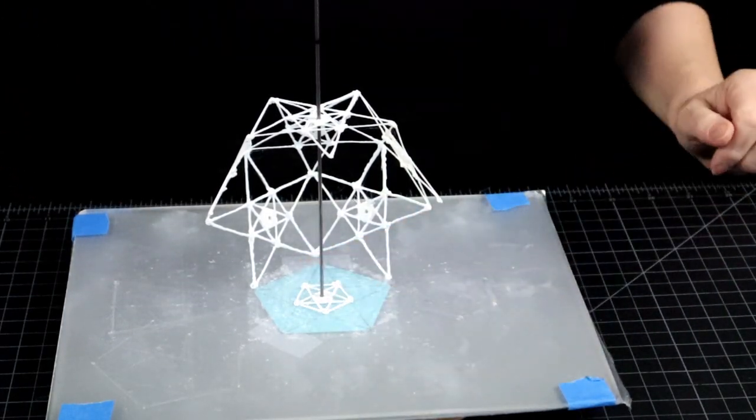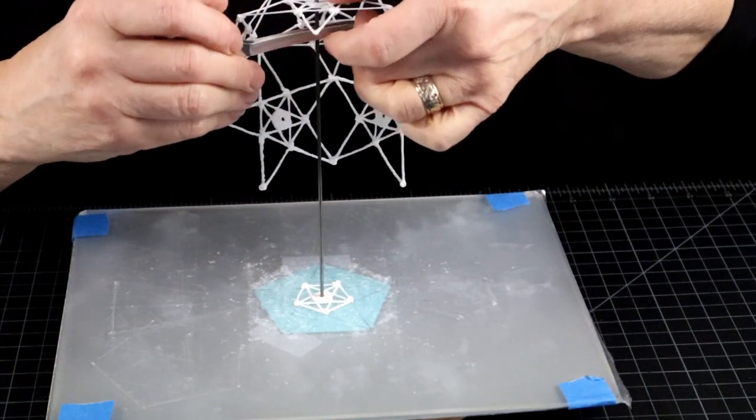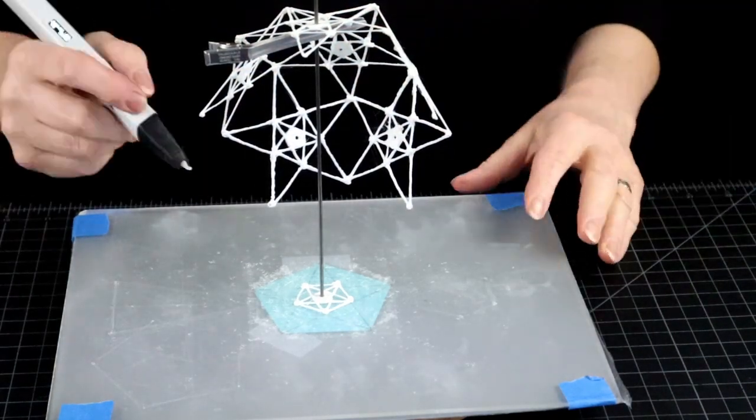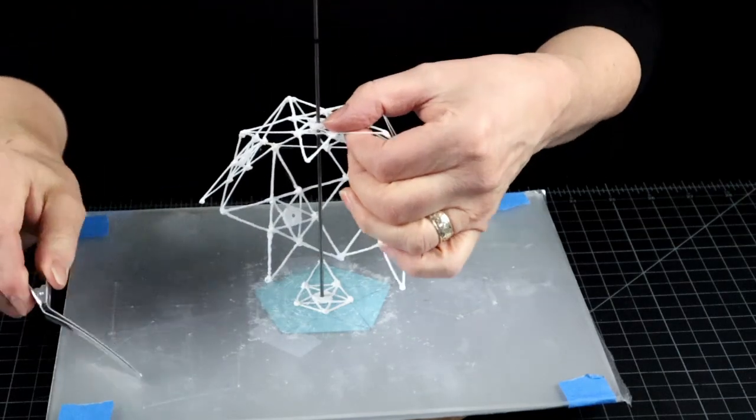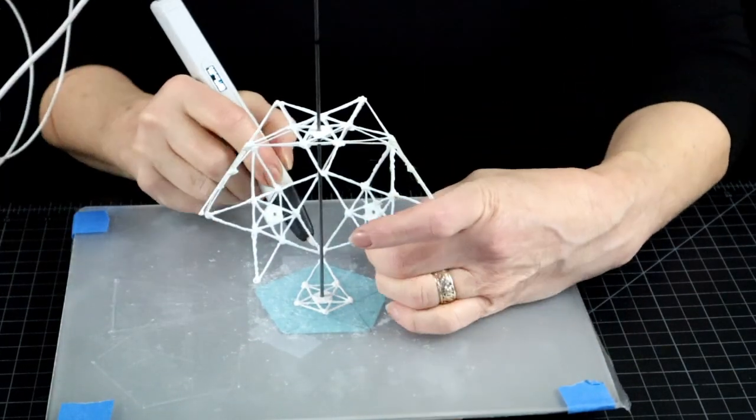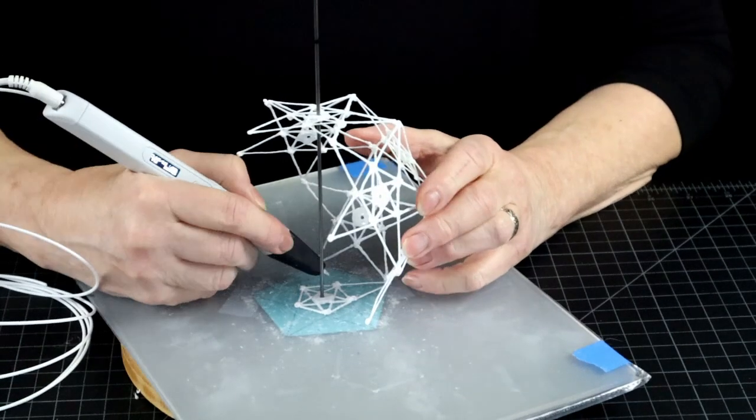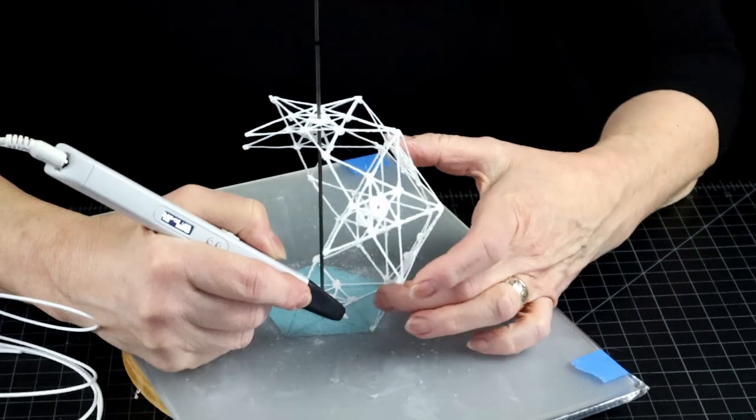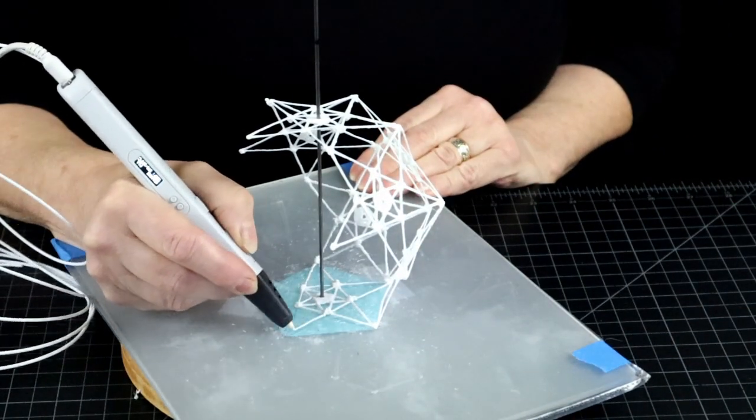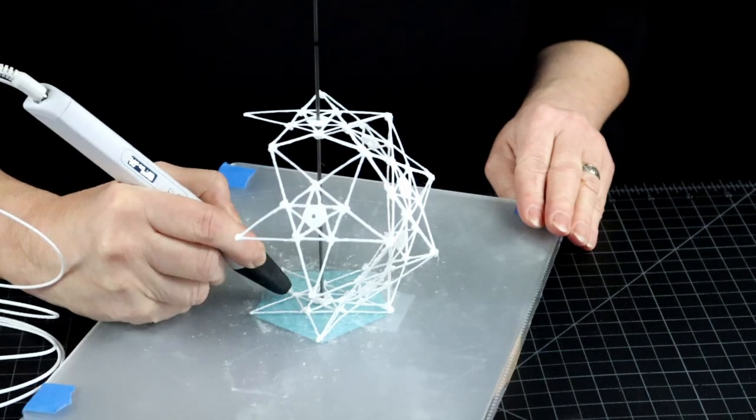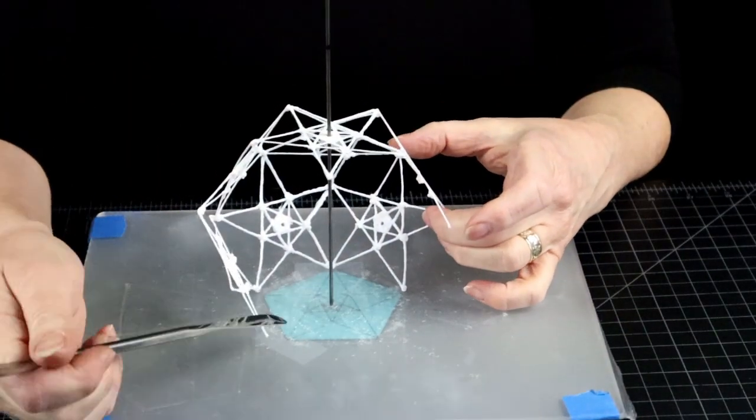If there are parts that are hard to reach, lift the whole thing and make whatever it is you can't reach first. And then drop the ball, or in this case dodecahedron, back down and attach it to the rest of the project. And repeat until done.